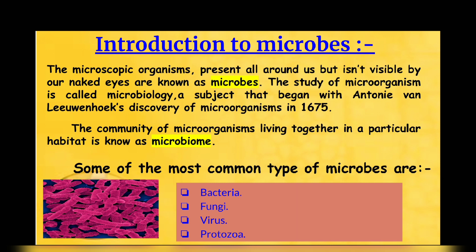Microbes are present all around us but aren't visible by our naked eyes. The most common types of microbes found are bacteria, viruses, fungi, protozoa, etc. The habitat a community of microbes occupies is known as a microbiome. The world itself can be considered as a large microbiome where all plants, animals and humans have their own unique microbiomes.